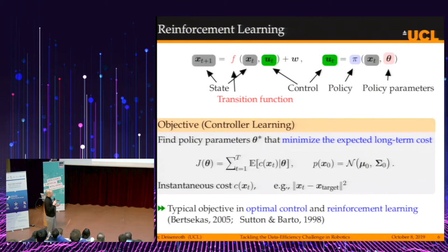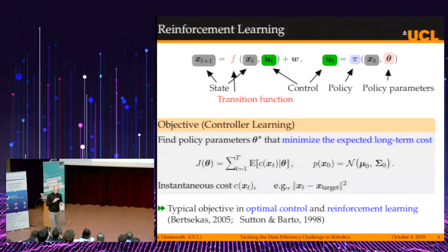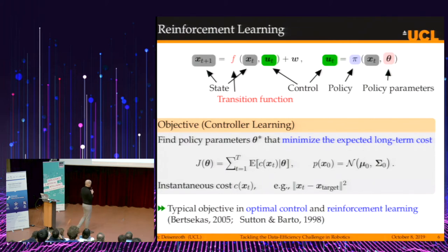The objective in reinforcement learning is to find optimal policy parameters theta star that minimize some expected long-term cost J(theta). J(theta) is a finite horizon sum of expected costs at each time step. This cost function could be a squared penalty between the current position of the robot and the target position — for example, a squared distance. I also assume the initial state is Gaussian distributed.